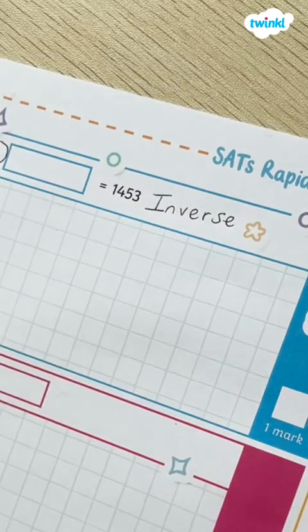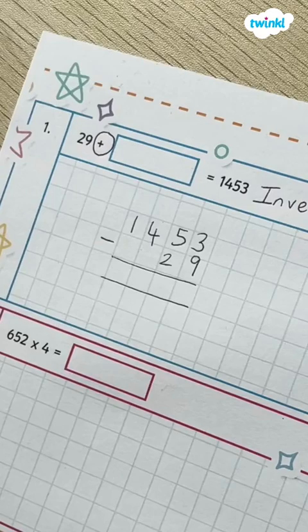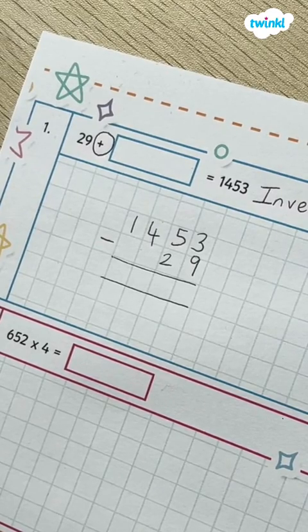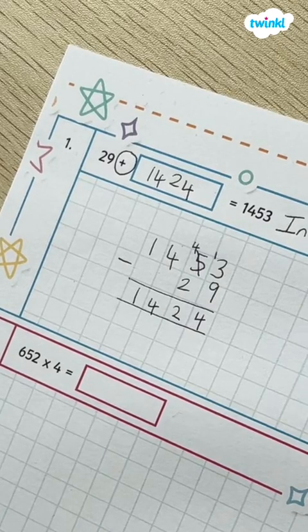For this question you're going to have to do the inverse, and the inverse of plus is take away. So all you have to do is start from the answer 1453 and work out the difference, take away 29, and use the subtraction written method for regrouping.